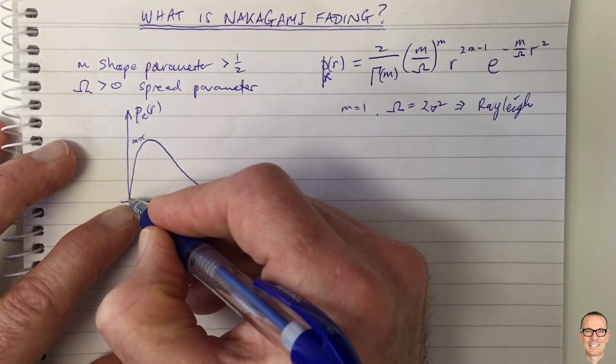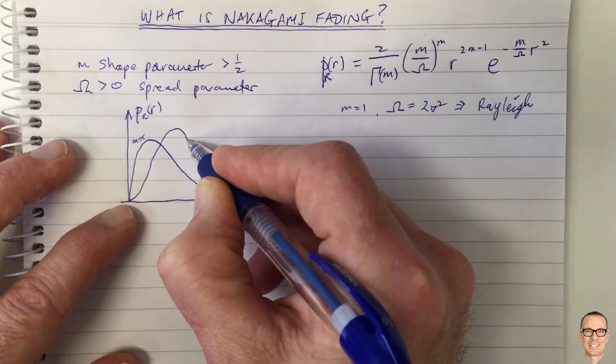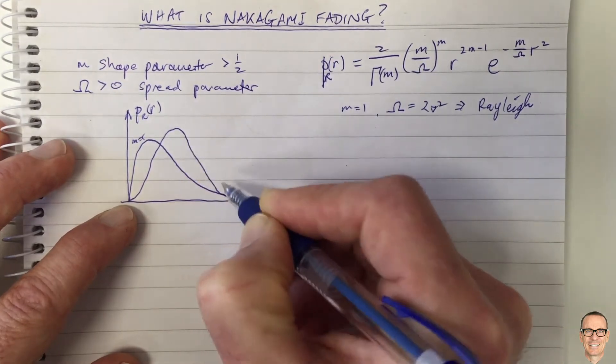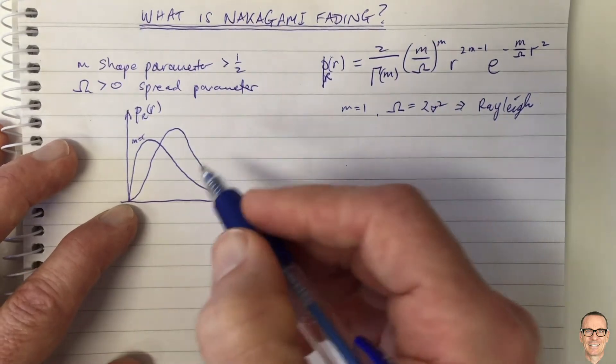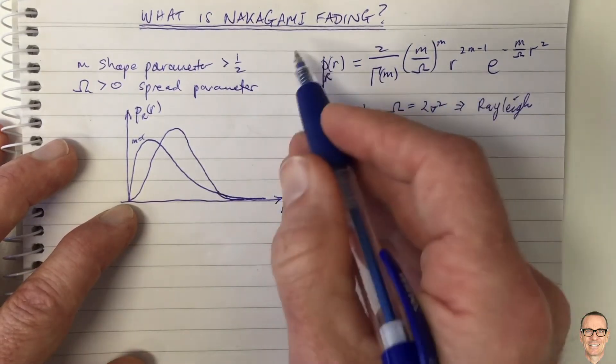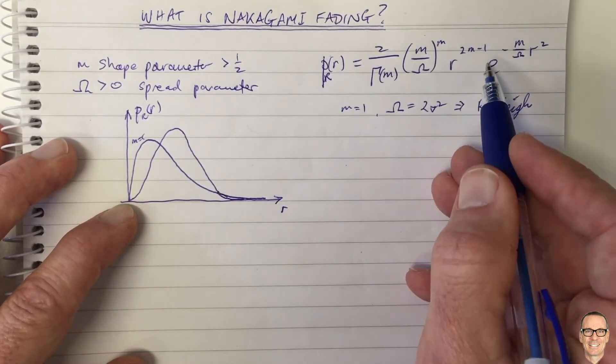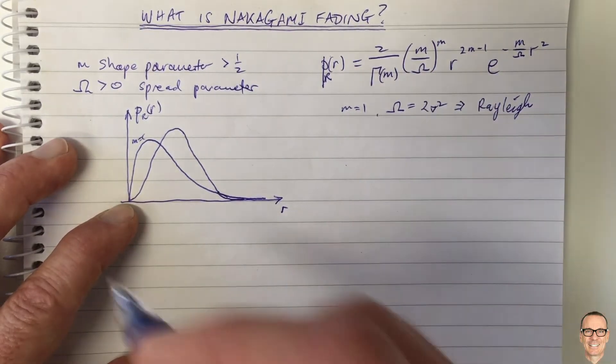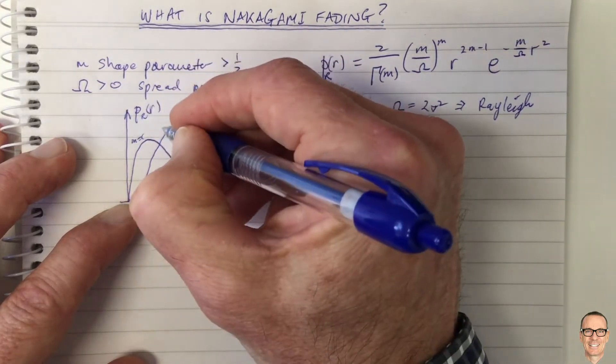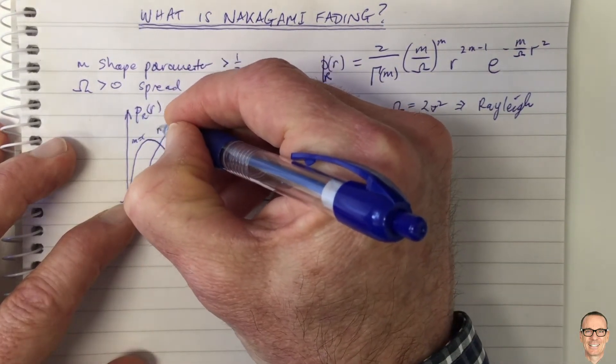You do that by taking measurements and then matching the measurements to the right parameters that you have for a particular model. So you take measurements, you pick a model whether it's Rayleigh or Ricean or Nakagami, and then you try to learn values of the parameters which match the measurements so that the PDF matches the histogram of your measured channel values.